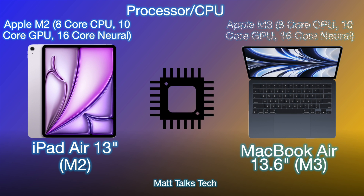The iPad Air has finally been upgraded to have an Apple M2 inside, with an 8-core CPU, 10-core GPU, and 16-core Neural Engine. The MacBook Air has the M3 — also an 8-core CPU, 10-core GPU, and 16-core Neural Engine. Looking at Geekbench scores, the M3 is only slightly better than the M2; the main area where the M3 leaps ahead is ray tracing — that's probably the only significant difference.